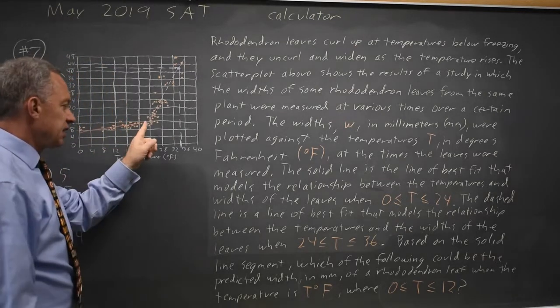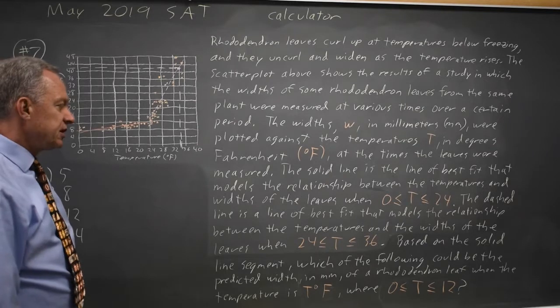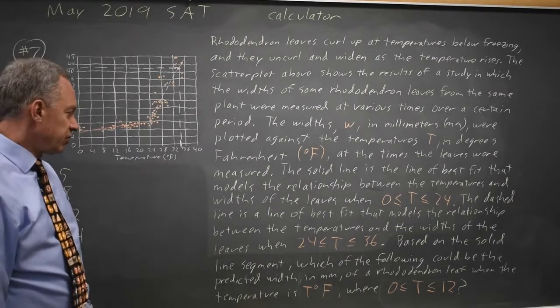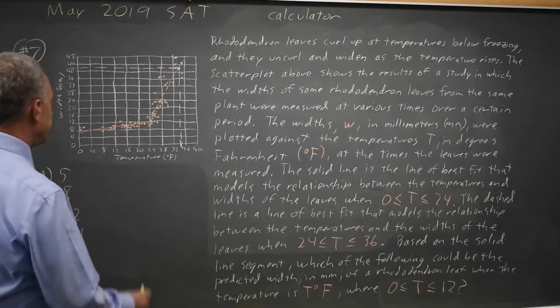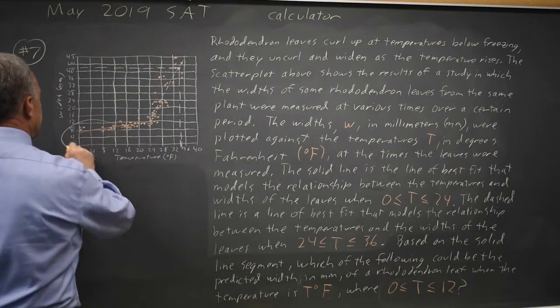Based on the solid line only, which could be the predicted width of a rhododendron leaf when the temperature is between 0 and 12 degrees? So that would be this segment here.